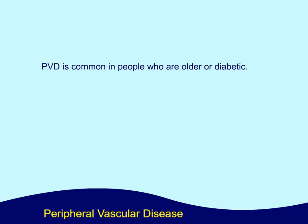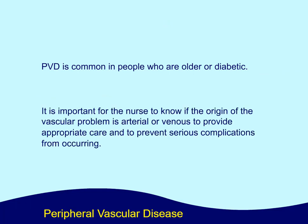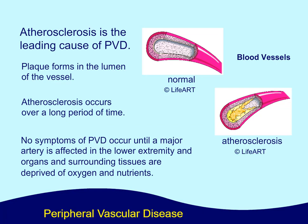PVD is common in people who are older or diabetic. It is important for the nurse to know if the origin of the vascular problem is arterial or venous to provide appropriate care and to prevent serious complications from occurring. Atherosclerosis is the leading cause of PVD. Plaque forms in the lumen of the vessel and occurs over a long period of time. No symptoms of PVD occur until a major artery is affected in the lower extremity and organs and surrounding tissues are deprived of oxygen and nutrients.